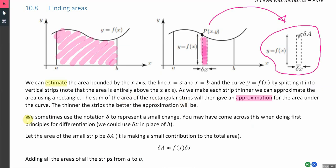We sometimes use the notation delta to represent a small change. You may have come across this when doing first principles with differentiation. Let the area of the small strip be delta a, so it's making a small contribution to the total area. Looking at this rectangle, delta a, which is the area of the rectangle, will be the height times by the width. The height is f of x, and the width is delta x.